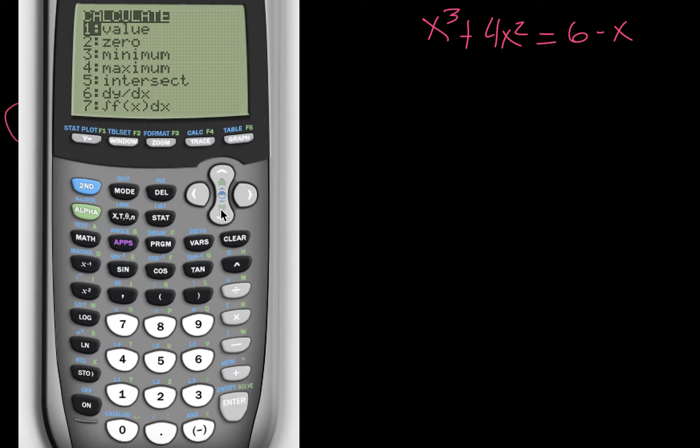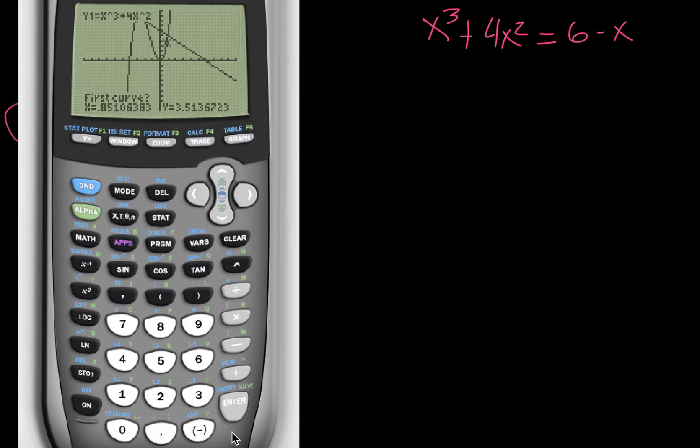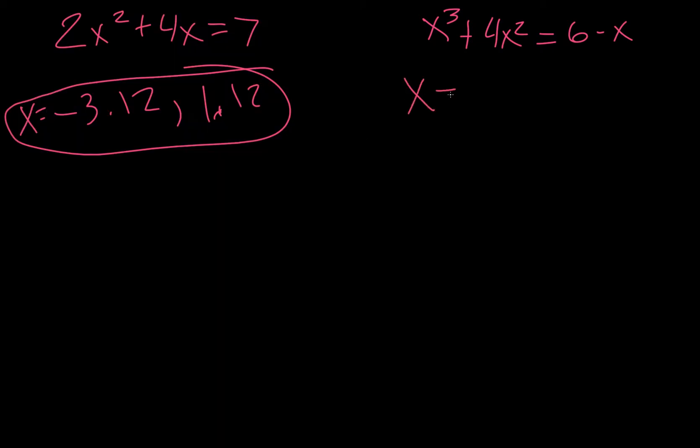Alright, let's try that again. So we're going to go intersect, first curve, second curve, and then my guess is right there. It thinks for a little bit, and it says the intersection, the x value is negative 3.